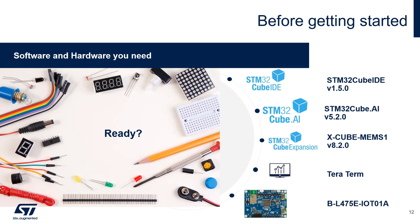Before getting started, here is the list of software and hardware we will need. We will use STM32CubeIDE version 1.5.0 or later. Within CubeIDE, you will be able to install X-Cube.ai version 5.2.0 or later for the neural network conversion tool and runtime library, and X-Cube-MEMS1 version 8.2.0 or later for the motion sensor component drivers. We are also going to need a serial terminal application such as TeraTerm. For hardware, we will use the STM32L4 Discovery Kit IoT node, the B-L475E-IOT01A.